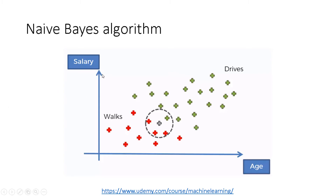Here we have two features — age and salary — and this is a classification problem, so one class is 'drives' and the other is 'walks.' The idea is that the older you are and the higher your salary, the more likely you are to drive to work, and the lower your salary and age, the more likely you are to walk. We receive a new sample to classify, and the question is whether to classify it as a person likely to walk or to drive.